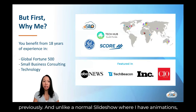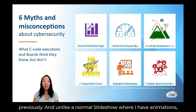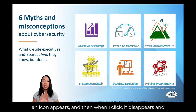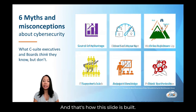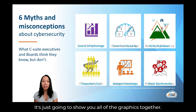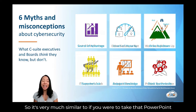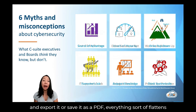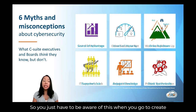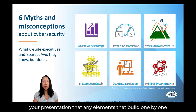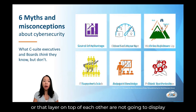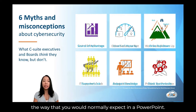This is a presentation that I've prepared previously, and unlike a normal slideshow where I have animations — an icon appears and then when I click it disappears and a new one takes its place — as you can see, there is no animation whatsoever. It's just going to show you all of the graphics together. It's very much similar to if you were to take that PowerPoint and export it or save it as a PDF. Everything sort of flattens out, all those layers flatten out, and this is what you see. So you just have to be aware of this when you go to create your presentation, that any elements that build one by one or layer on top of each other are not going to display the way that you would normally expect in a PowerPoint.